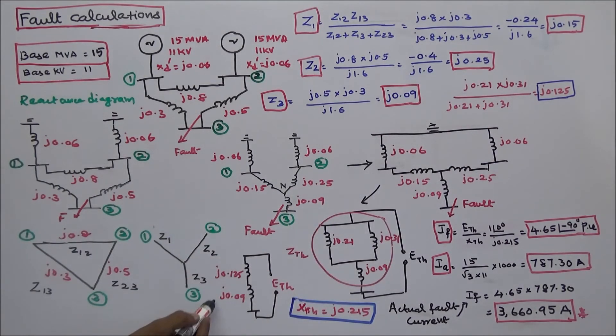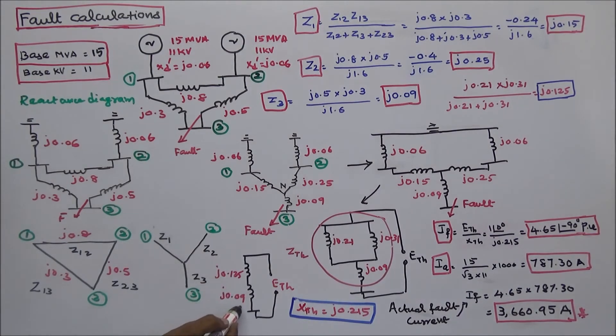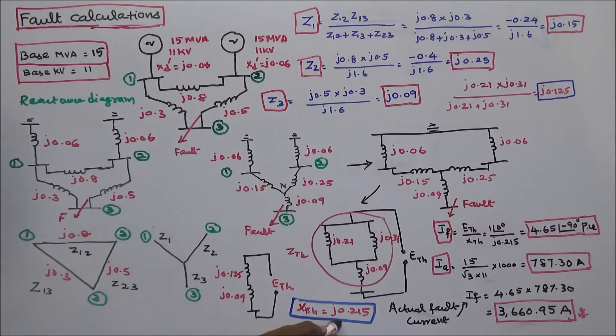The parallel combination gives J0.125, and this is in series with Z3 equal to J0.09. Adding them: J0.125 plus J0.09 gives the total Thevenin reactance, which equals J0.215.